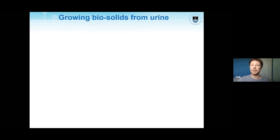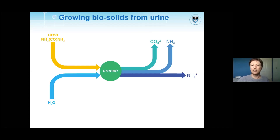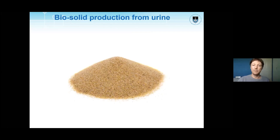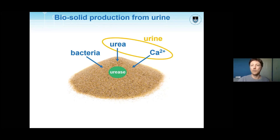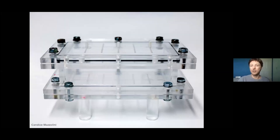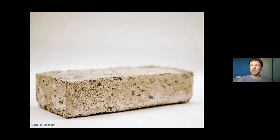We also took this a step further — we grew biosolids from human urine. Coming back to the urea degradation reaction, this time we're after the carbonate ion. The process involves colonizing sand with bacteria that produce the enzyme urease. You feed the bacteria a urea and calcium source from urine; the bacteria produce urease to break down urea into carbonate ions, which combine with calcium to form calcium carbonate, essentially gluing loose sand particles together. When done in the shape of a brick, you get a solid forming after four to six days, using minimal energy in a completely natural process.